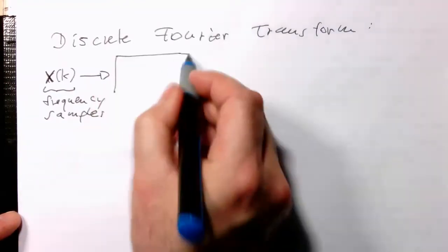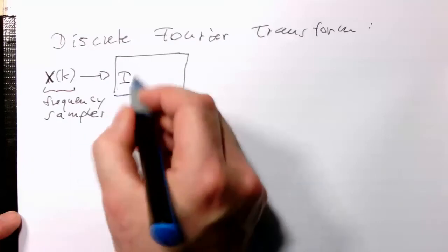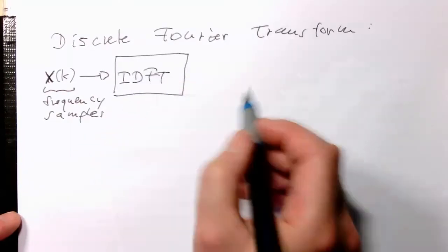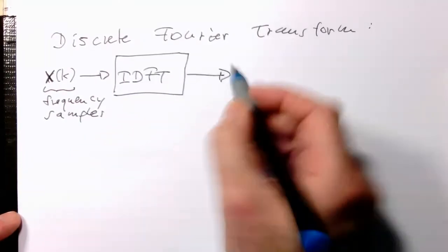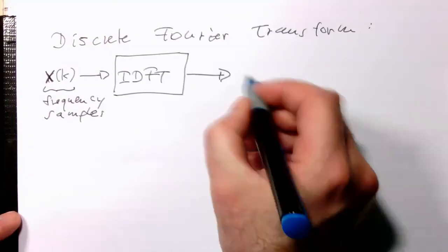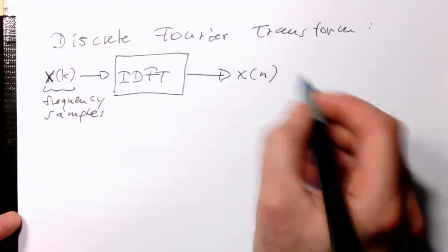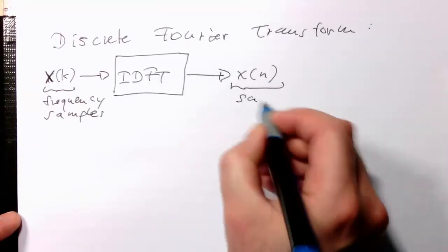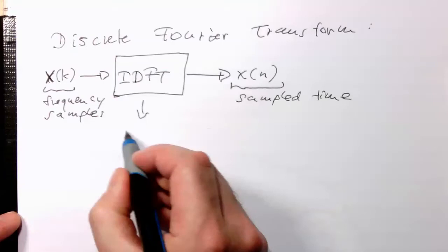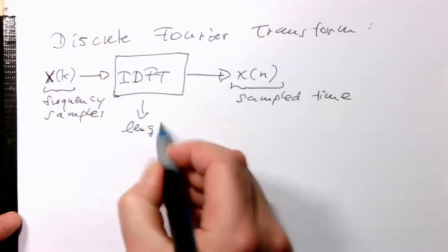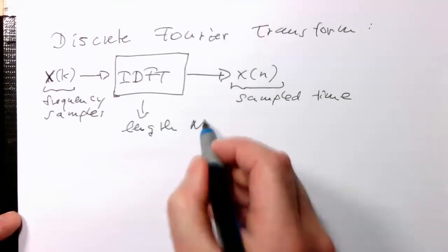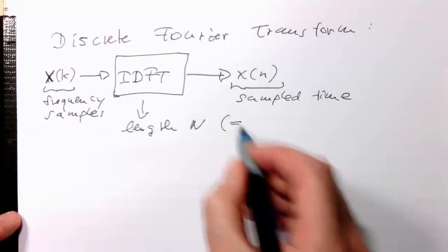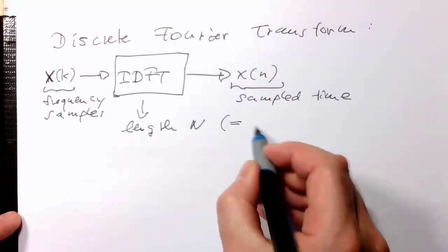So this is our inverse discrete Fourier transform. And then this sends out a sequence in sample time. So this is sampled length N, and in our case this is equivalent to the length of the symbol.